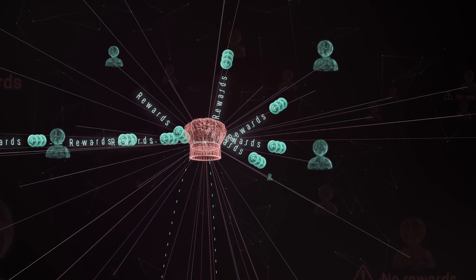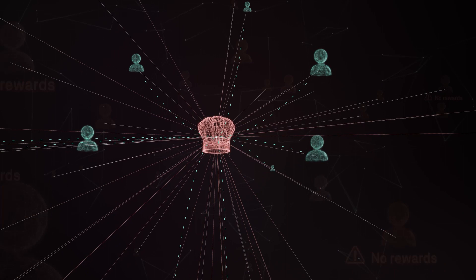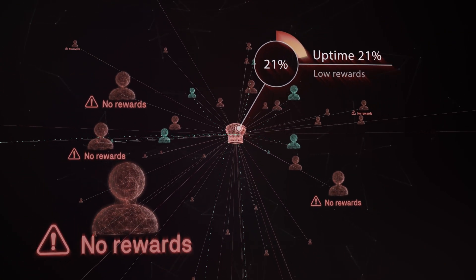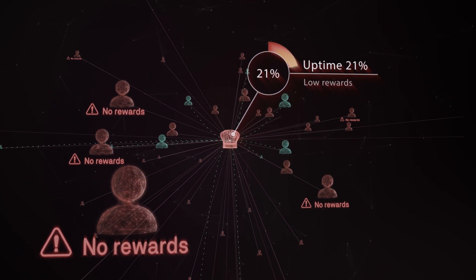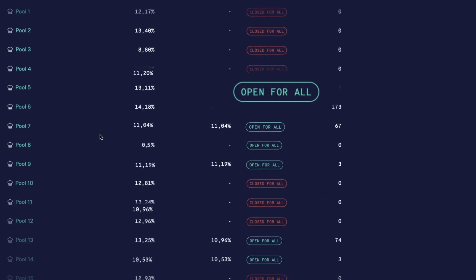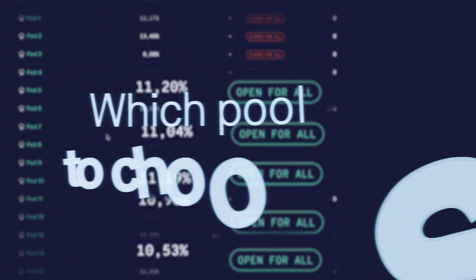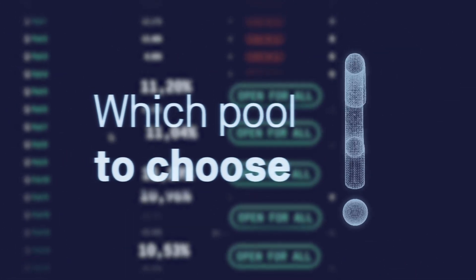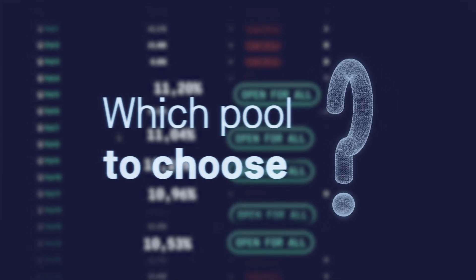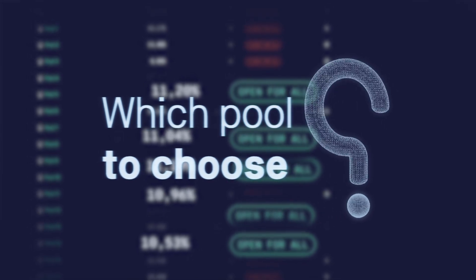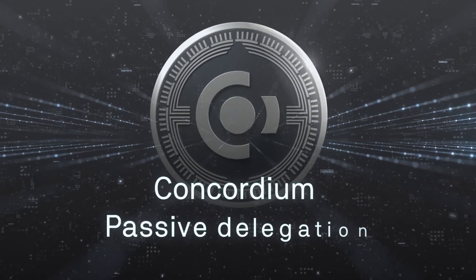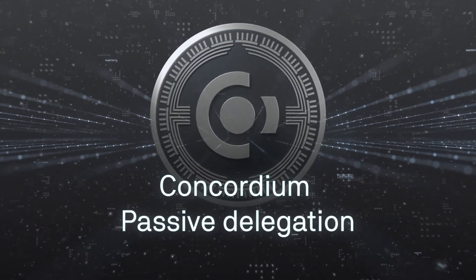Even worse, if too many users delegate to malicious pools, there is the risk of them taking over the system. Since it is impossible to know whether a pool owner has malicious intentions and it is cumbersome to regularly check the performance of pools, Concordium offers a novel feature called passive delegation.